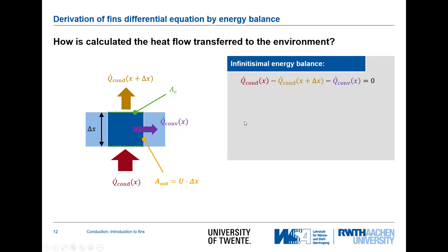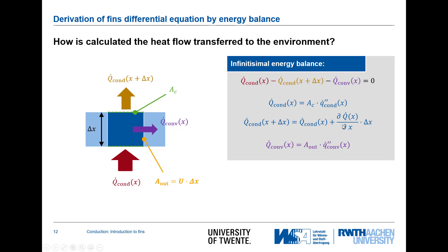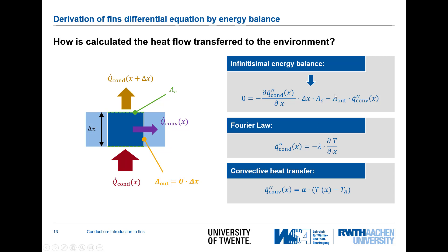As usual, we start with the energy balance. We always make the balance with the absolute flow: the conductive flow going in, the conductive flow going out at location x plus dx, minus the convection flow at location x — they all sum to zero. The conductive flow is the cross-sectional area times the area-specific conduction flow, and the conductive flow at x plus dx is the incoming flow plus the change over the element delta x. For the convective flow, it is similarly the circumferential area times the area-specific convective flow.